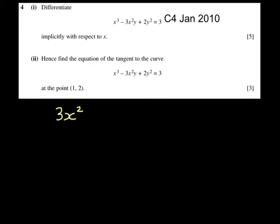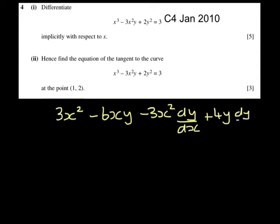So if I differentiate 3x squared, I get minus 6x, and I've got to multiply that by y. I then have my minus 3x squared multiplied by the differential of y, which is dy dx, plus 4y dy dx has to equal 0.